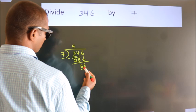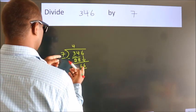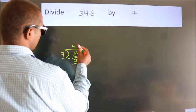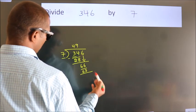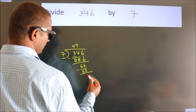A number close to 66 in 7 table is 7 nines, 63. Now, we subtract. We get 3.